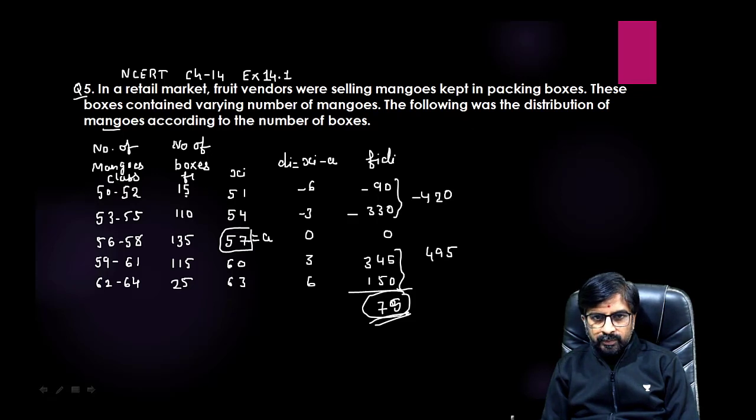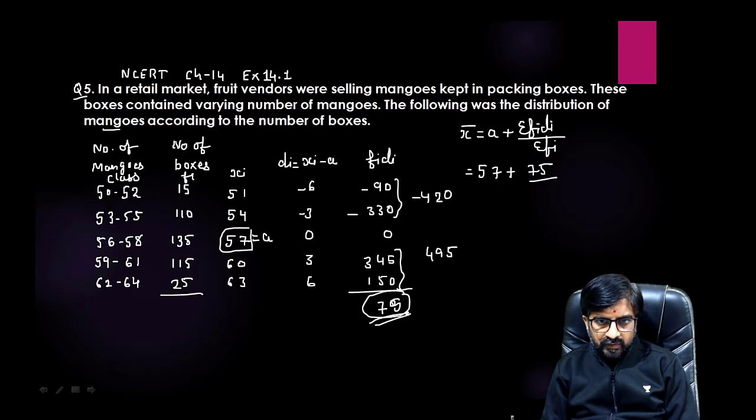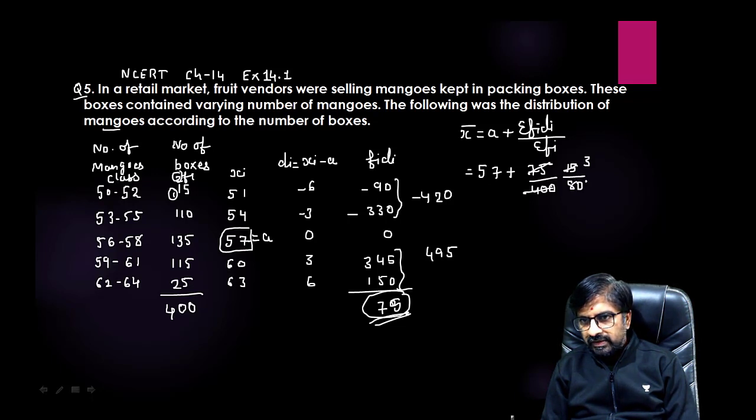Always try to use assumed mean method if numbers are big. Now our formula: x̄ = a + Σ(fi di) / Σfi. a is 57 plus positive 75 by fi. They had not given the sum, so let me add. 15 plus 110 is 125, plus 135 is 260, plus 115 is 375, plus 25 is 400. So here you need to keep 400.